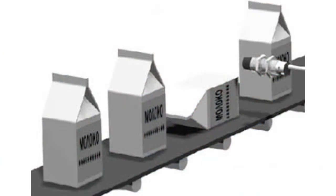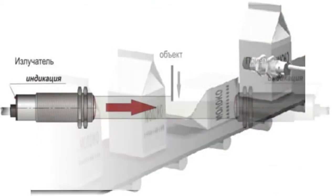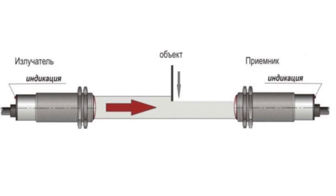Such switches consist of two stand-alone units: a source of optical radiation and a radiation receiver. A source of optical radiation and a receiver may be designed either in a common or individual frames.